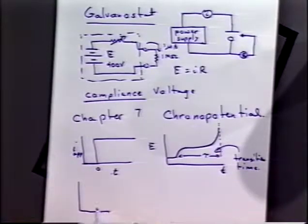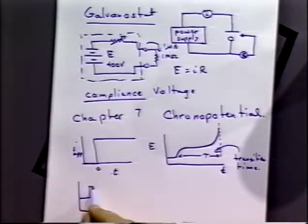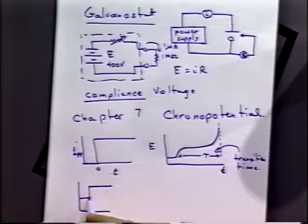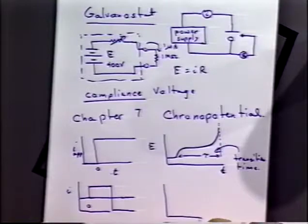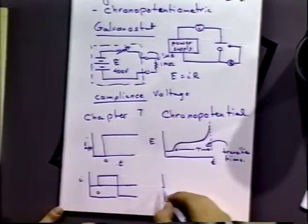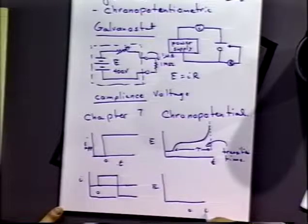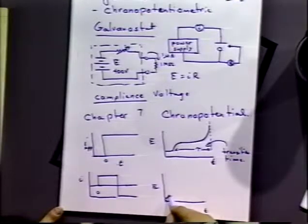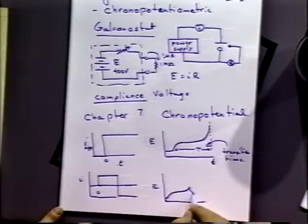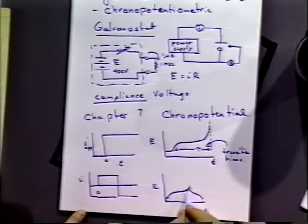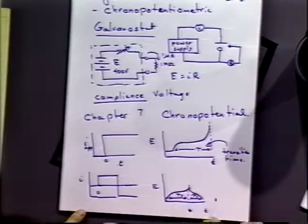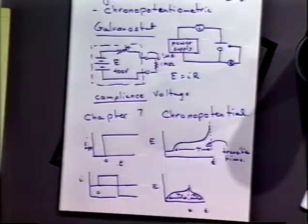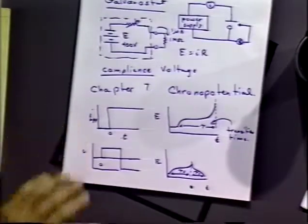So that's one variant. They also have a current reversal experiment where you would do a similar thing, where you apply a current step and then reverse that current at some time. And so the potential out would look something like this. And you would measure these two times, Tf and tau sub r.